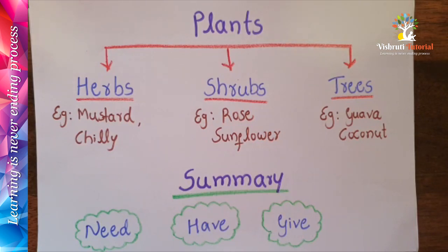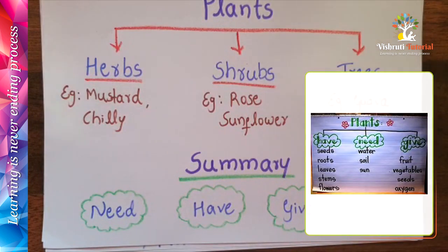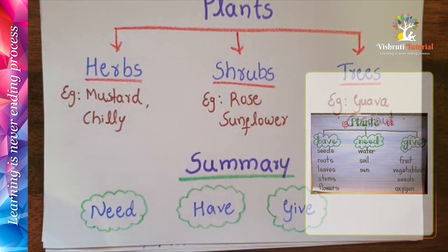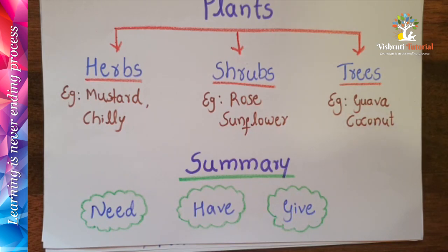Let's have a summary. What do plants need? Plants need water, soil, sun, and air. What do plants have? Roots, seeds, stems, leaves, and flowers. What do plants give us? Plants give us fruits, vegetables, seeds, and oxygen. That's the short summary of plants.